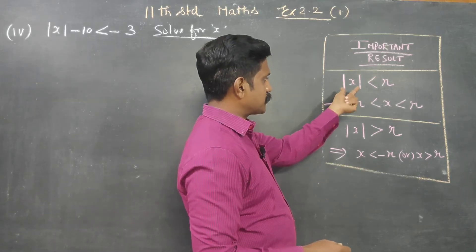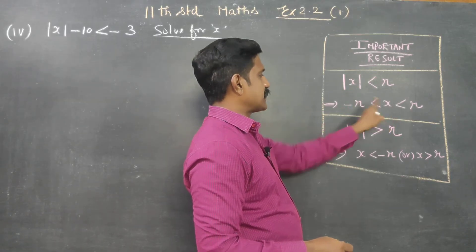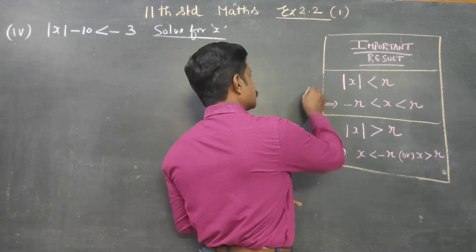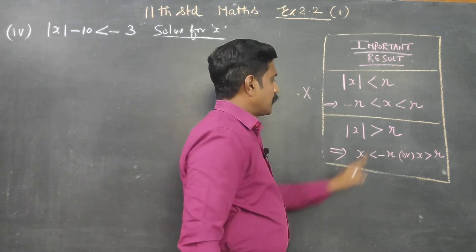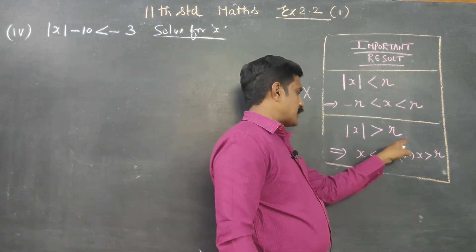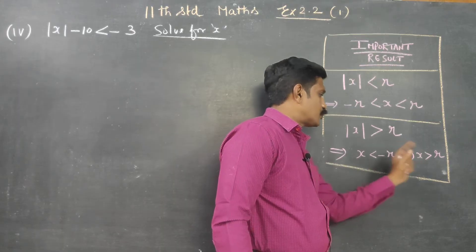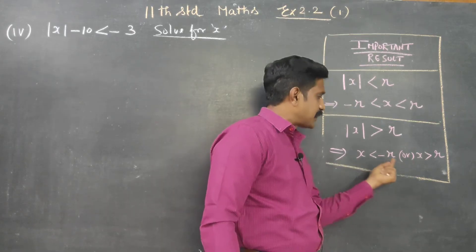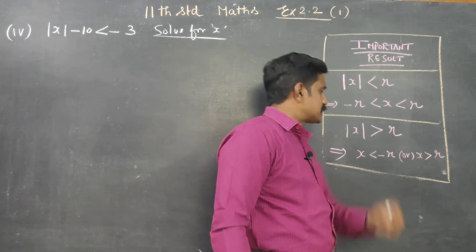The first result: if the absolute value of x is less than r, it means x lies between minus r and plus r. The second result: if the absolute value of x is greater than r, the answers are two divisions — x is less than minus r, or x is greater than plus r.